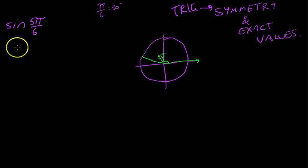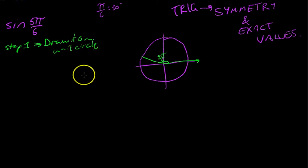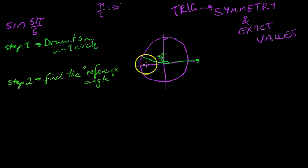So that's our first step. Step 1: Draw it on the unit circle. Okay, so that's step 1 out of the way. Step 2 is to find the reference angle. Now, what do we mean by the reference angle? We mean the angle that that line makes with the x-axis, the acute angle that that line makes with the x-axis. That's this angle here.